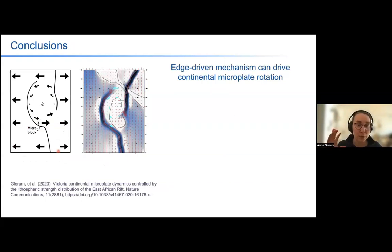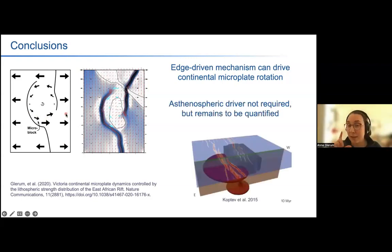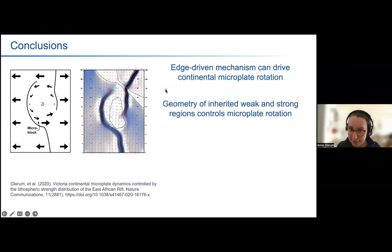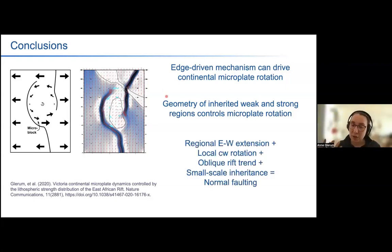In conclusion: first, we've shown that the edge-driven mechanism can drive continental microplate rotation, and that we do not need a sinusoidal — that is, mantle plume — driver for this rotation. Second, the geometry of inherited weak and strong regions controls microplate rotation for a certain set of boundary conditions. And lastly, the tectonic regime is the combination of the overall east-west extension, a local counterclockwise rotation of the velocity field, the obliqueness of the rift trends, and any small-scale inheritance.